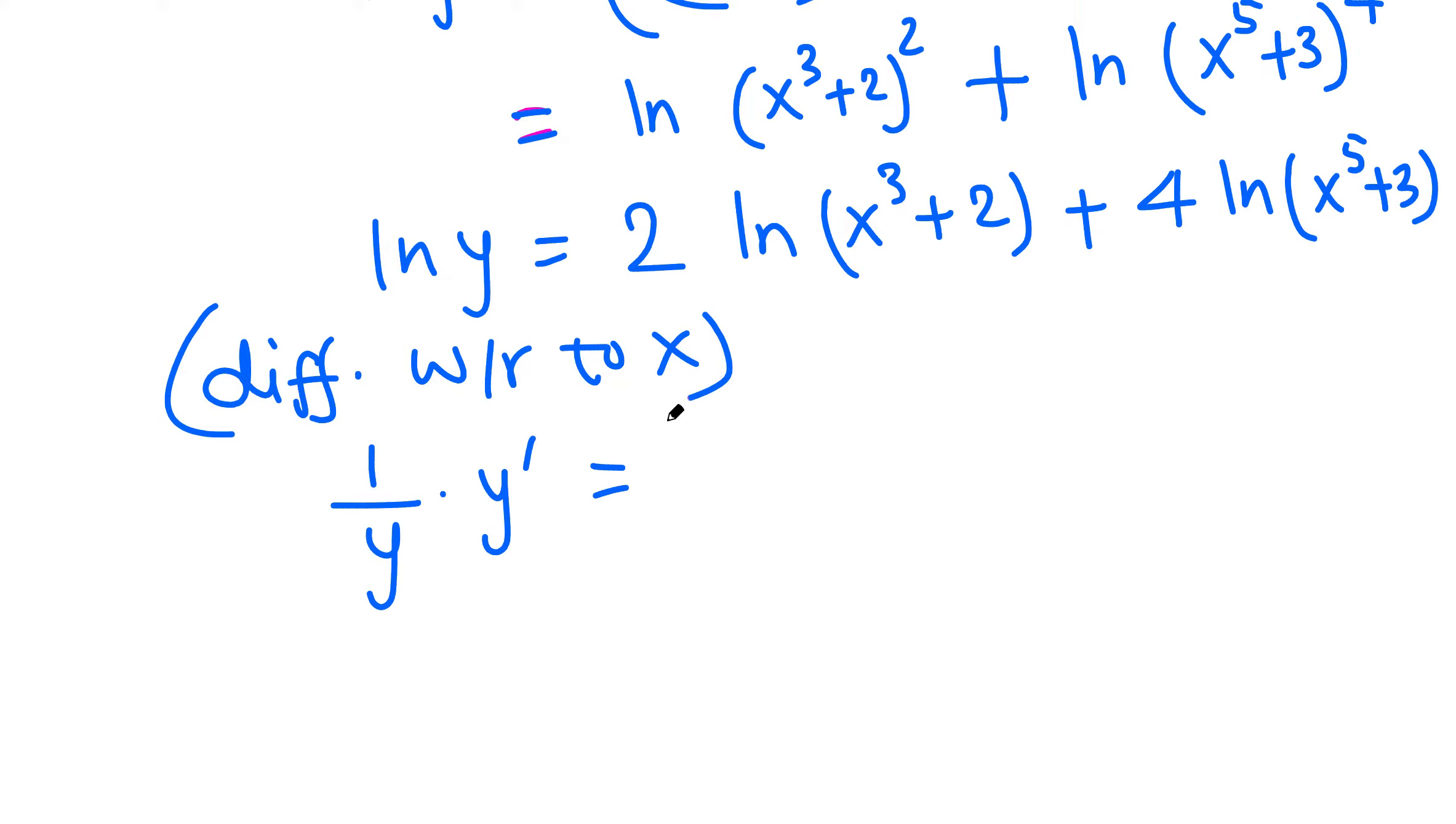That's the left-hand side. It should be easy now. We have 2 times 1 over (x³ + 2) times the derivative of this, which is easier in this case. So the derivative of x³ + 2 is 3x² plus 0.